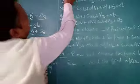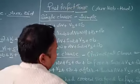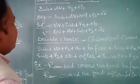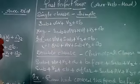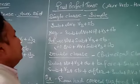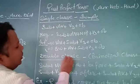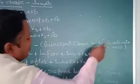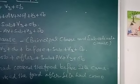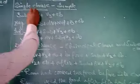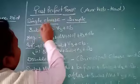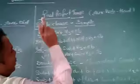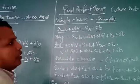Now it's time for past perfect tense. In past perfect tense, most sentences remain in a single clause, but some sentences remain in double clause. For single clause, the simple sentence structure is: subject, auxiliary verb 'had,' verb third form plus object. The auxiliary verb for past perfect is 'had.'